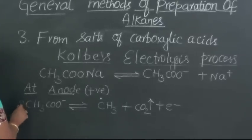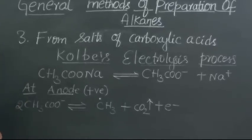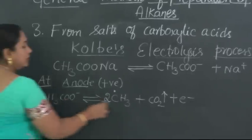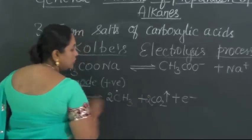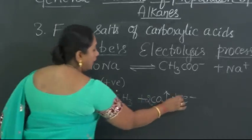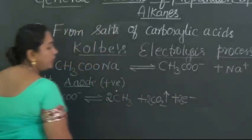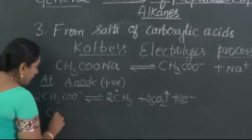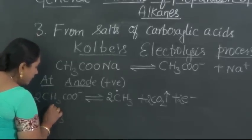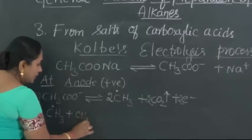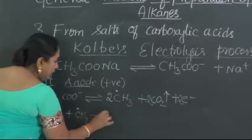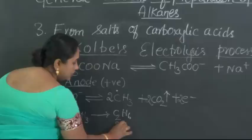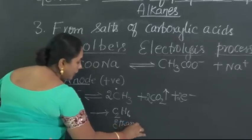Now, two such molecules of acetate ions will release two molecules of methyl free radical, forming two molecules of carbon dioxide and also releasing two electrons into the solution. Now, two such methyl free radicals will combine with each other forming C2H6, that is ethane, which is the second member of alkanes.